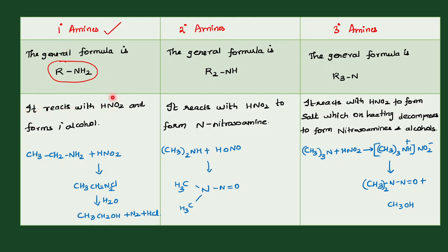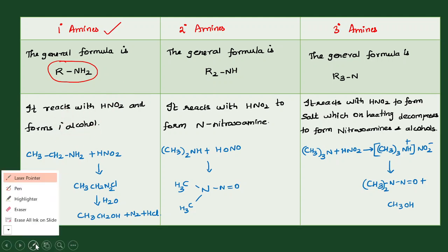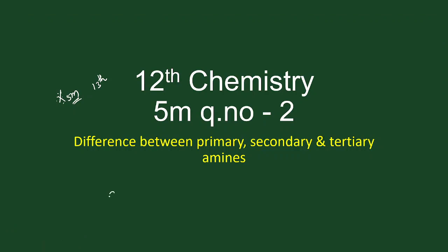Primary amine reacts with HNO2 and forms primary alcohol. If you take primary amine, HNO2 is going to react — that is nitrous acid — and form primary alcohol. The reaction is a diazotization reaction. For example, CH3CH2-NH2 is a primary amine with an NH2 group, and it reacts with HNO2.